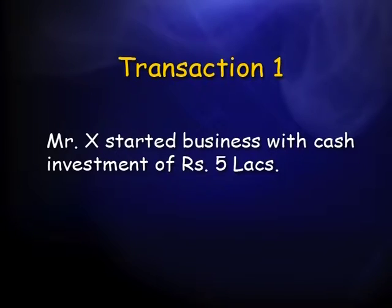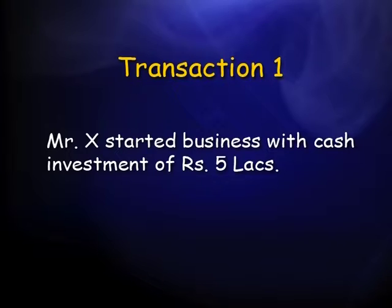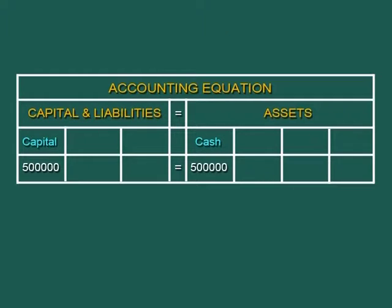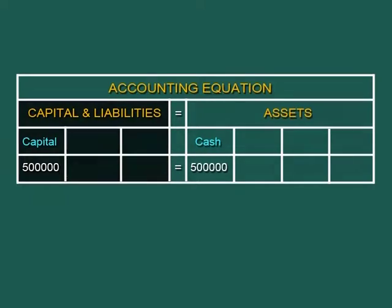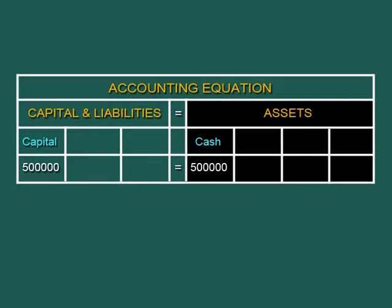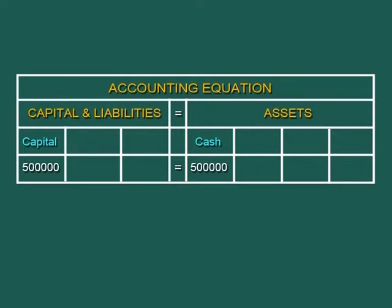Now let us understand the accounting equation with the help of examples. First transaction: Mr. X started business with a cash investment of rupees 5 lakh. The two aspects are investment by the owner — capital — and receipt of an asset, cash, by the business. On the capital and liability side we have rupees 5 lakh of capital, and on the asset side we have cash of rupees 5 lakh. Both sides are equal.